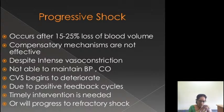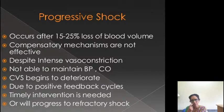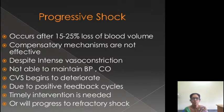This progressive shock occurs when the loss of blood volume is about 15 to 25%. Here, compensatory mechanisms are not effective. Earlier we have seen the compensatory mechanisms were effective - these negative feedback mechanisms were effective and they were trying to restore the blood pressure to normal. But here, in this stage of shock, compensatory mechanisms are not effective. Despite intense vasoconstriction, they are not able to maintain the BP and the cardiac output.